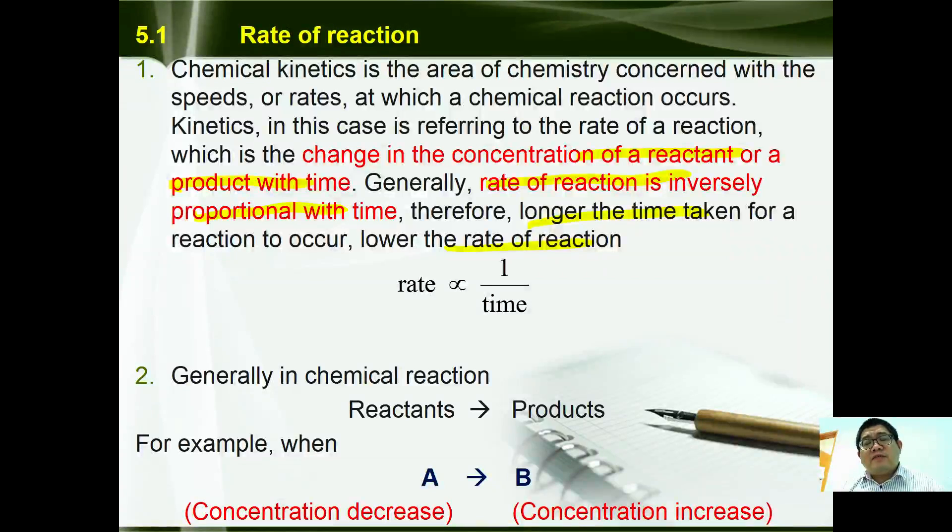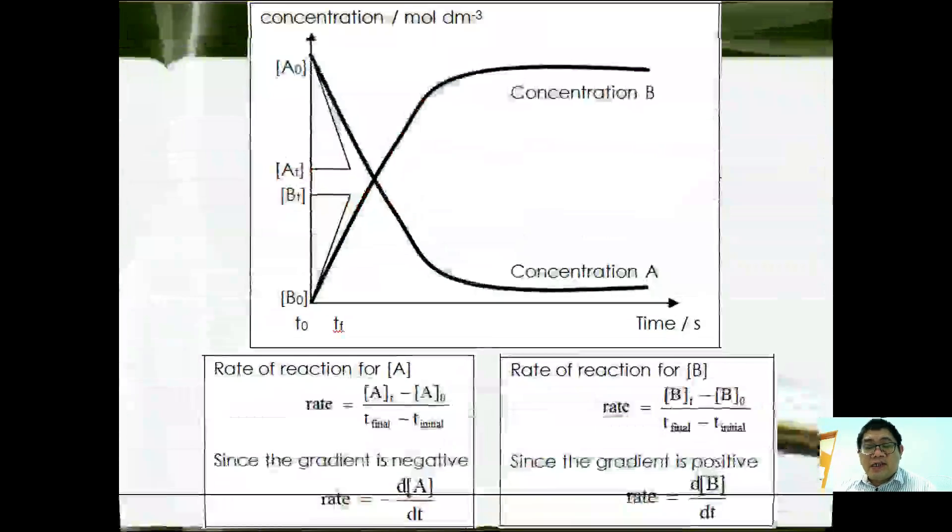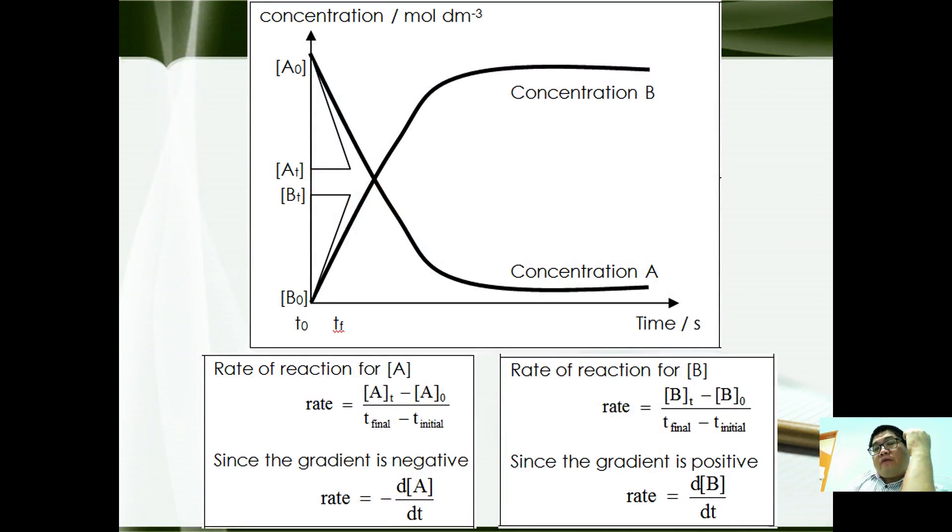Let's take an example for a general chemical reaction where we have reactants become products. For example, when A becomes B, as time passes, concentration of A will decrease while concentration of B will increase. So if you were to plot a graph of concentration against time, this is generally what a graph of A and B looks like.